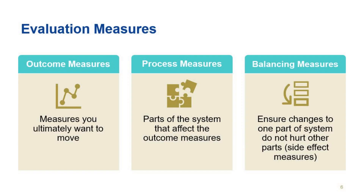Evaluation measures can fall into these three categories. Outcome measures are typically the high-level quality or cost targets. Process measures are specific steps in the process that lead to the outcome measures you want. And balancing measures help ensure an improvement in one area does not negatively impact another.